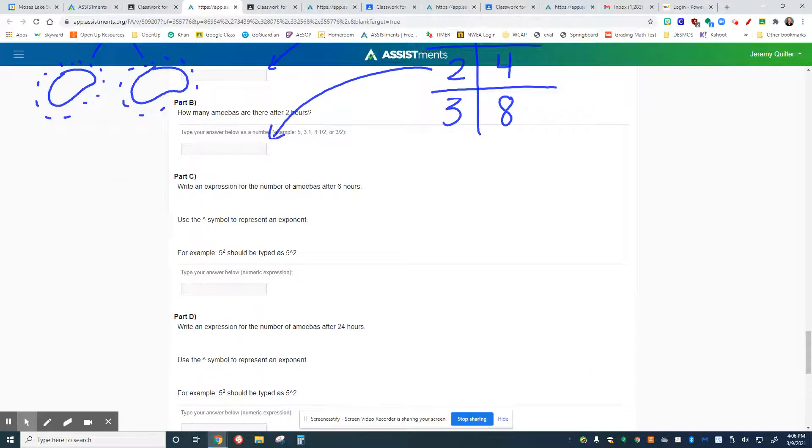And it says write an expression for the number of amoeba after six hours. But this time, we want it in exponential form. So as you continue, if you continue this table here, that's totally fine. You can keep doing that. But you have to think about the piece about what's happening. We have to think about that rate that's happening is that that amoeba, that one amoeba is doubling over and over and over and over again every single hour.